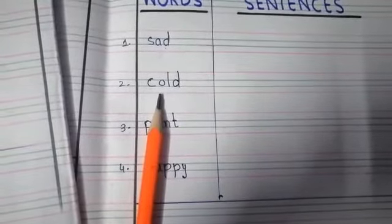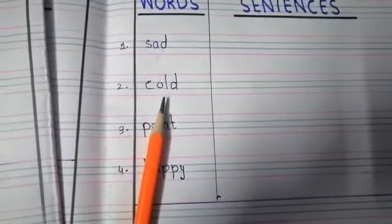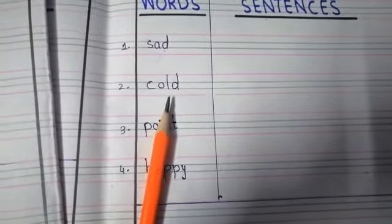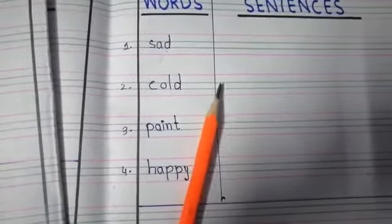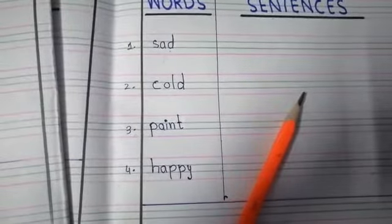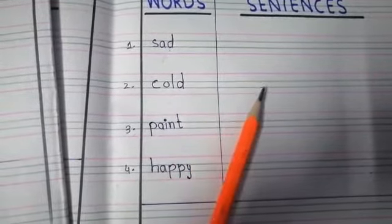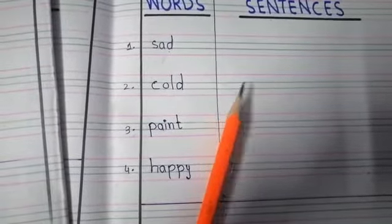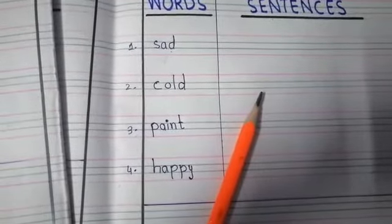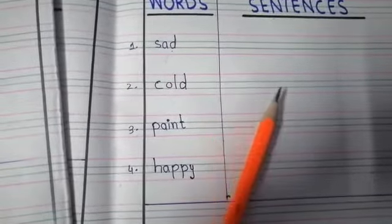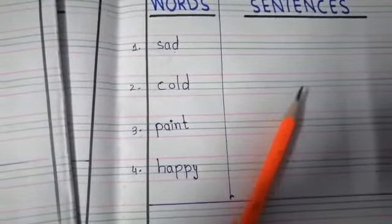Number two word is cold. Cold means sardhi. The weather is cold. Number two, I am feeling cold. Number three example, I like cold weather.